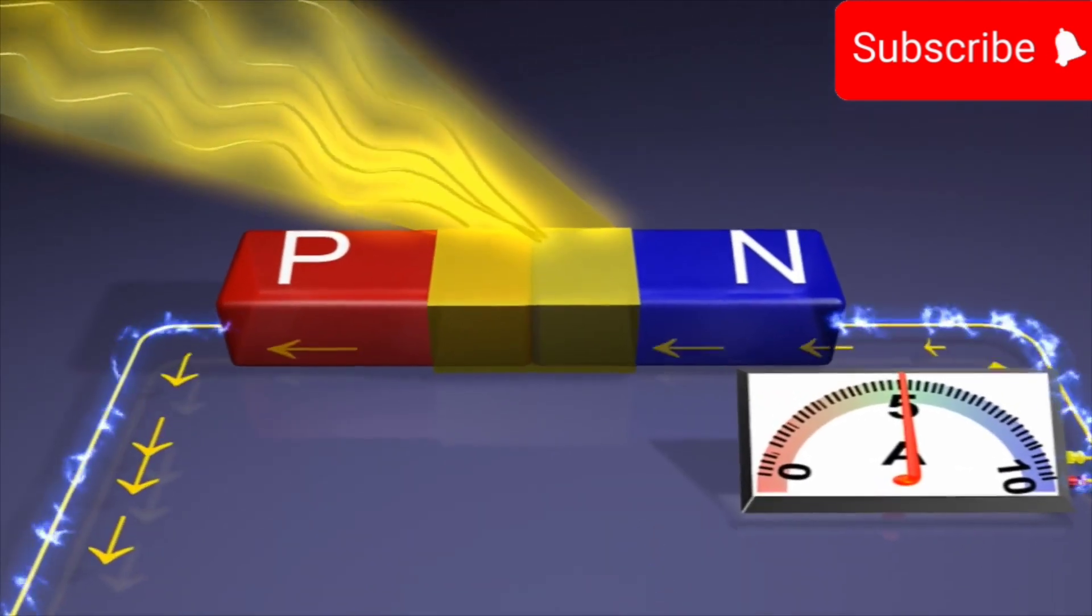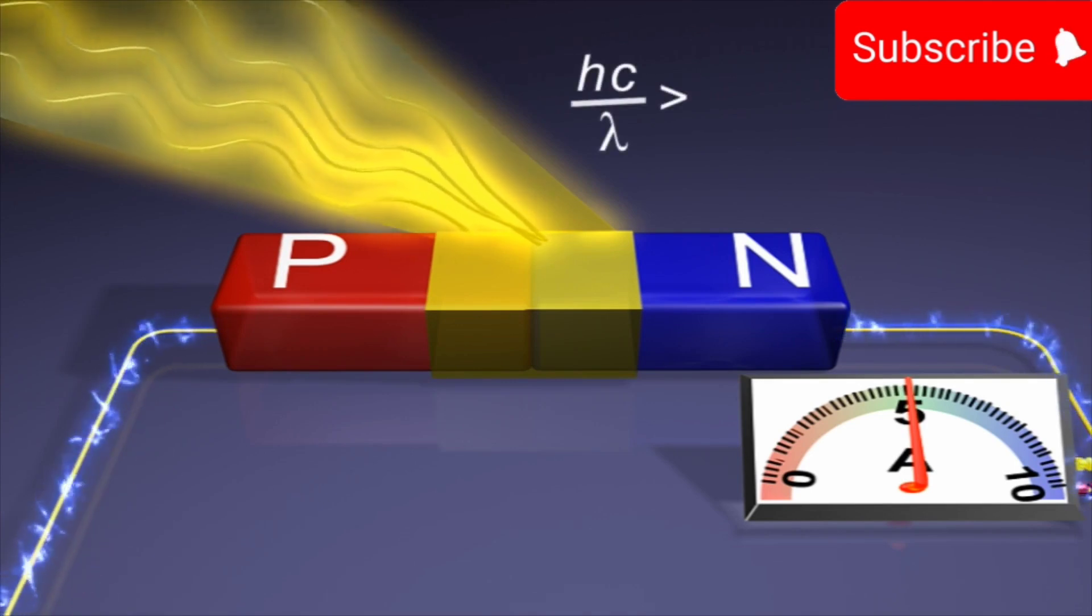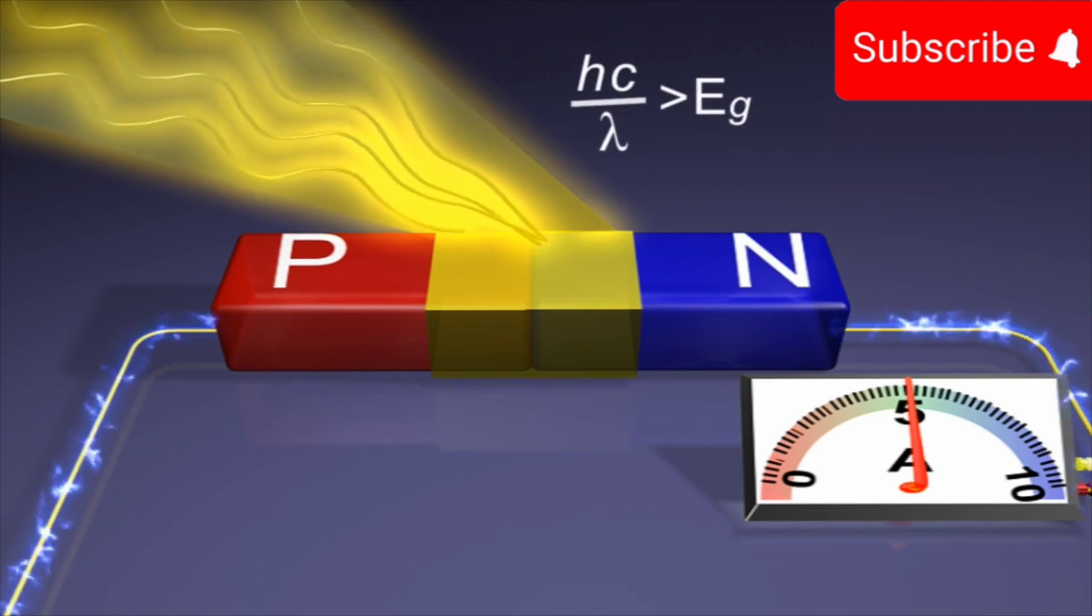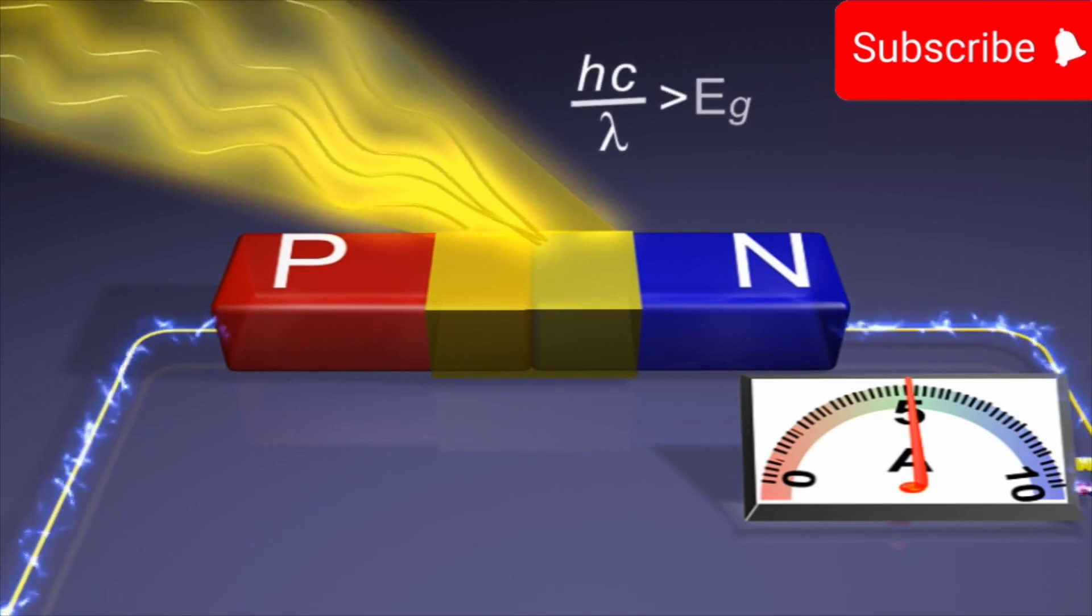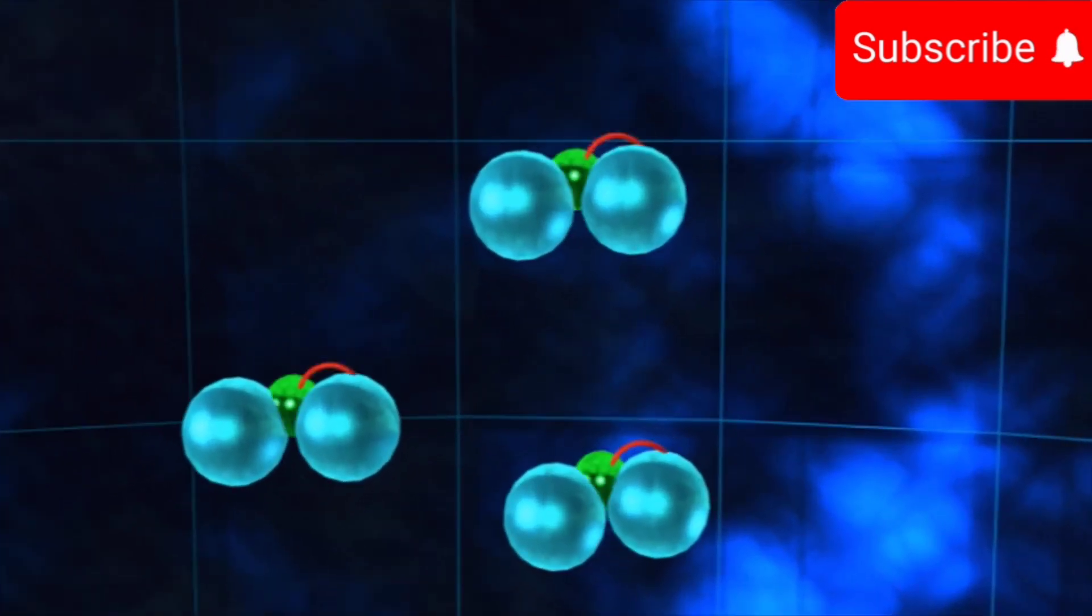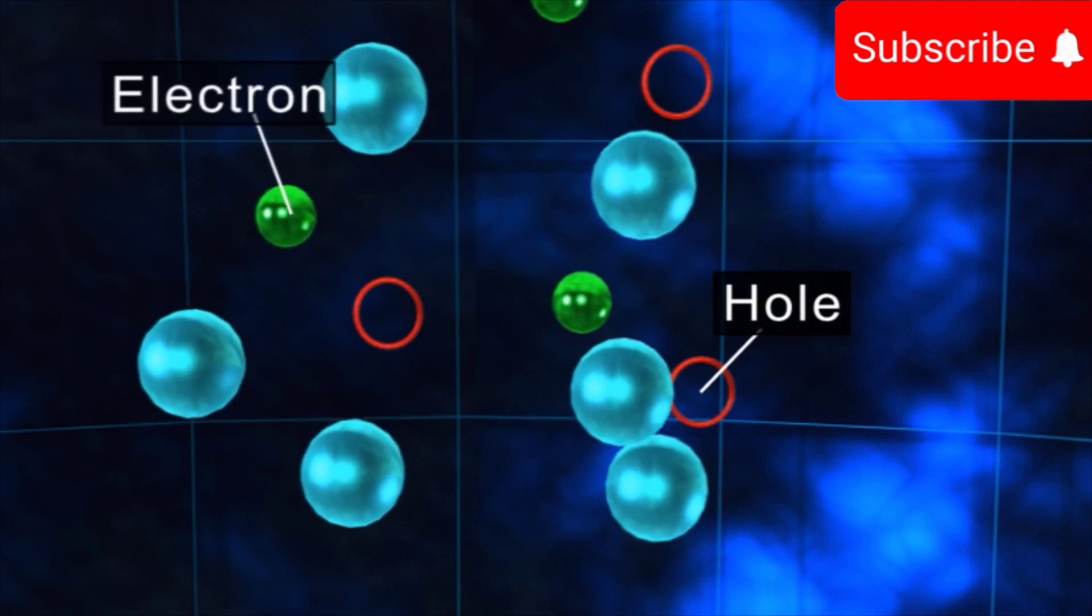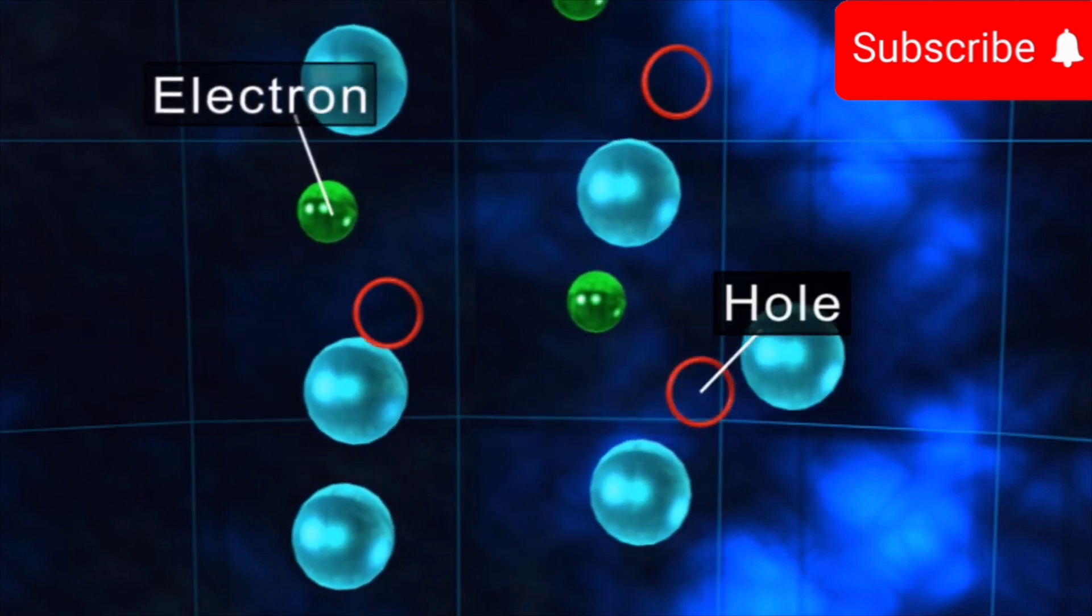When the energy of the light incident on the junction hc by lambda is more than Eg, large number of covalent bonds are broken near the junction. This further produces large number of electron hole pairs.